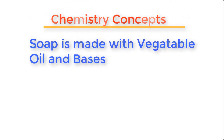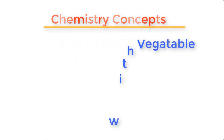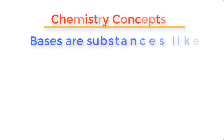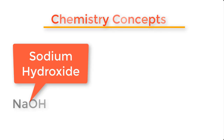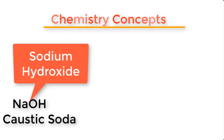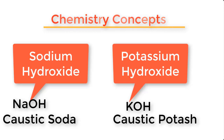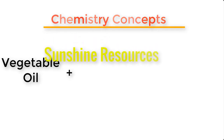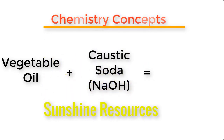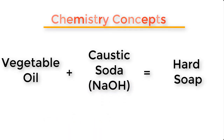Before we go into the production proper, let me explain some basic concepts about soap making using vegetable oils and bases. In chemistry, bases are substances like sodium hydroxide with the chemical formula NaOH, also called caustic soda. When you react vegetable oil with caustic soda — that is sodium hydroxide — you will get a hard soap.